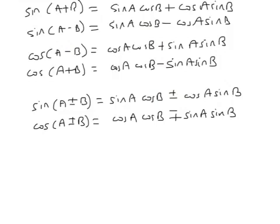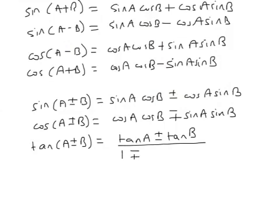Now, I'm not going to go through the proof of those with you, nor am I going to go through the proof of the one for tan. Tan A plus or minus B is tan A plus or minus tan B over 1 minus or plus tan A multiplied by tan B.